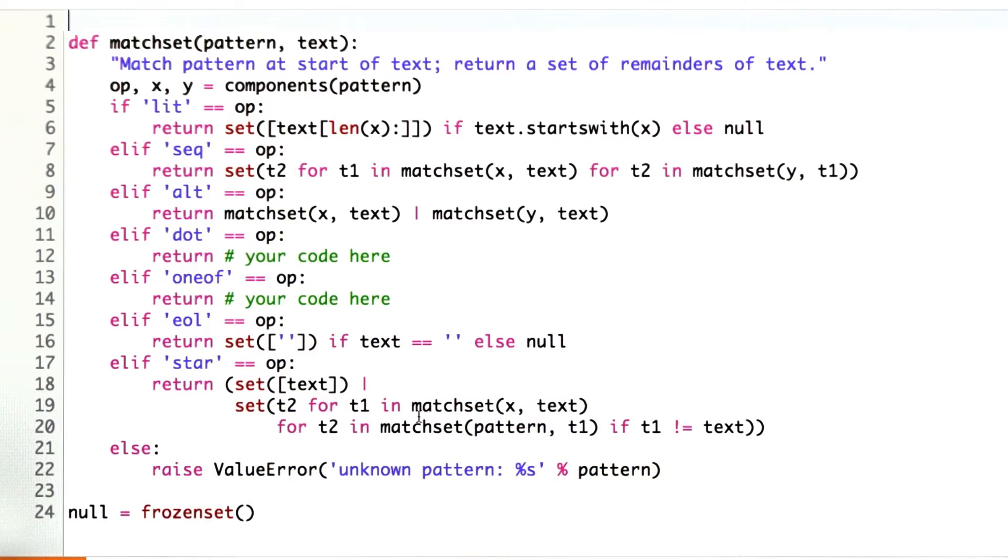Sequence is a complicated one. It says if we're asked for a sequence of x and y, we first find the matching set for x. That's going to be a set of possible remainders. We go through all of those and then take the remainder of that text, which would be t1, and then match y against that remainder. For each of those alternatives, that's what we're going to return in the set.